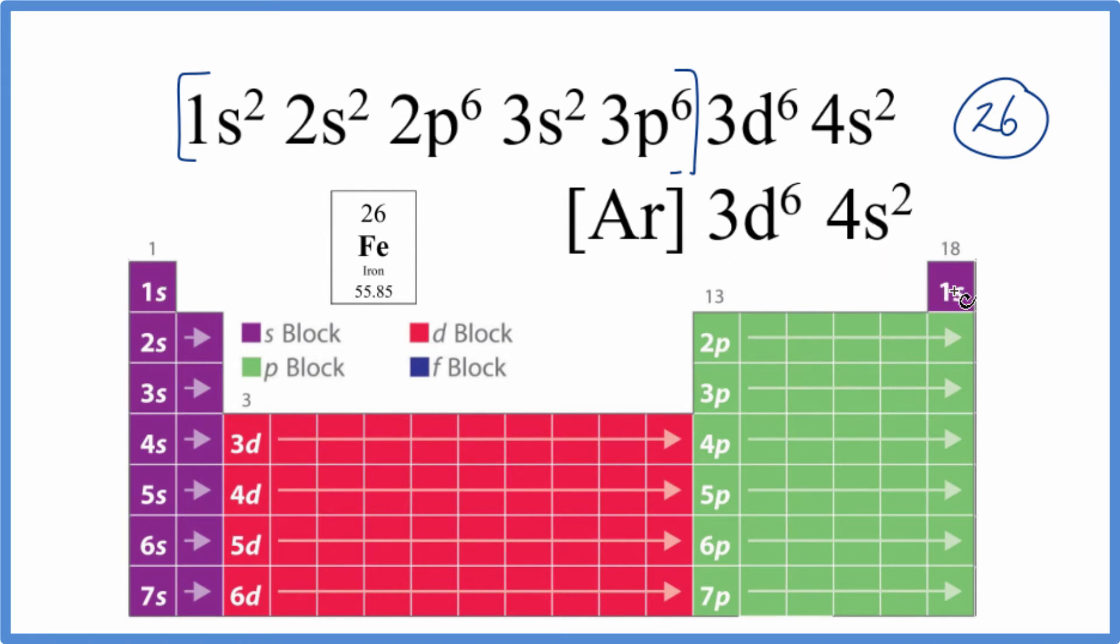So we have 1s¹, 1s², s is full with 2, we have 2s², p, that can hold up to 6, so we have 2p¹, 2, 3, 4, 5, 6, 3s², 3p⁶.